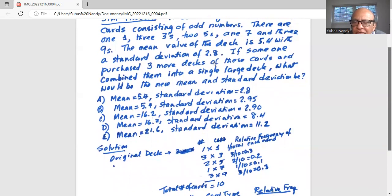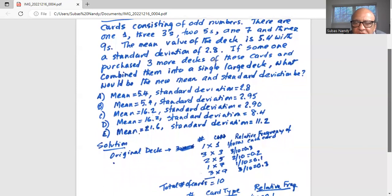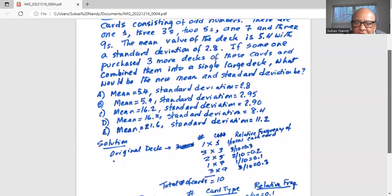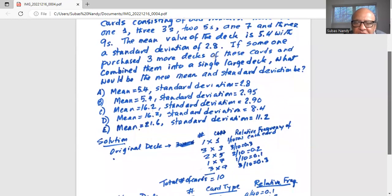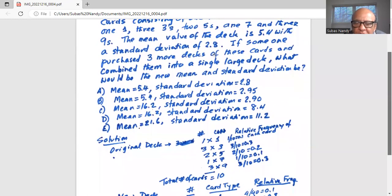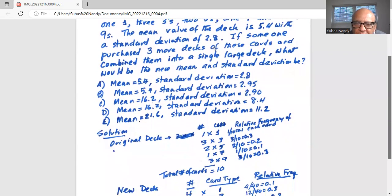So what is the relative frequency of each card? For number 1 it is 1 out of 10, or 0.1. For number 3 it is 3 out of 10, or 0.3. For number 5 it is 2 out of 10, or 0.2. For number 7 it is 1 out of 10, or 0.1. And the relative frequency of number 9 card is 3 out of 10, or 0.3.